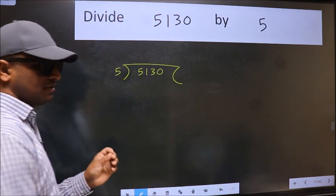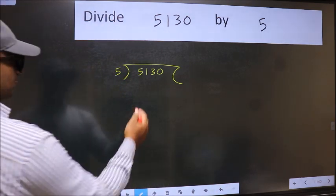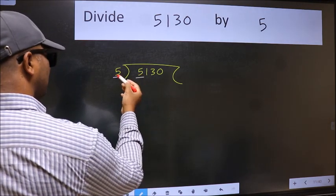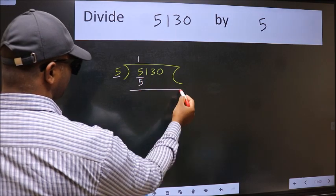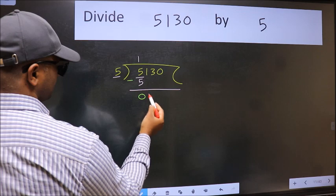This is your step 1. Next, here we have 5 and here 5. When do we get 5 in the 5 table? 5 once 5. Now we should subtract. We get 0.